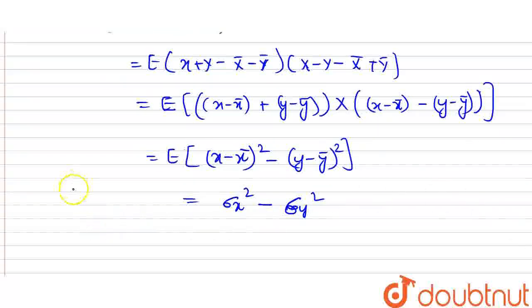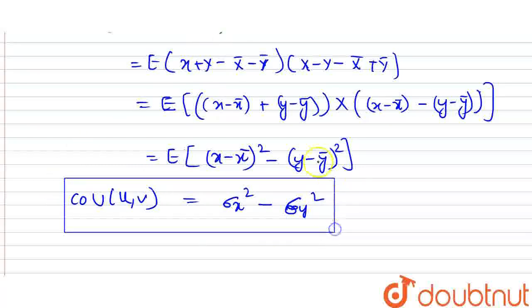So what is it? The covariance of u, v — this is the covariance value of u, v. Okay?